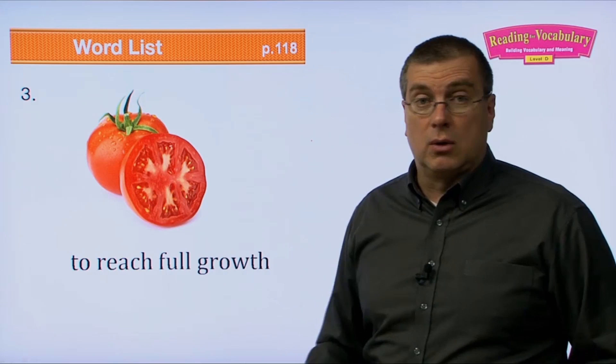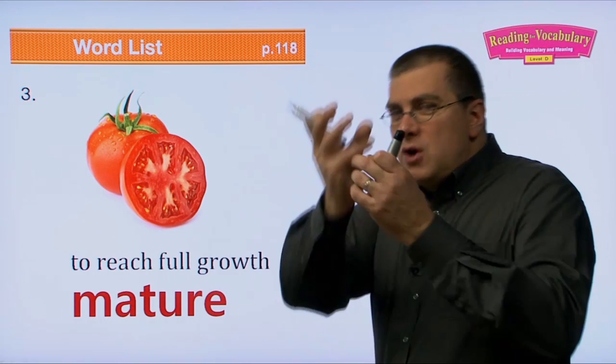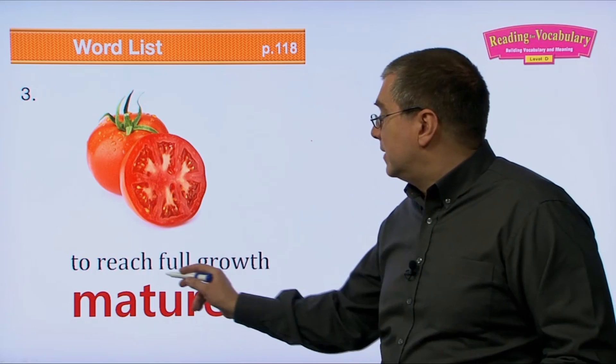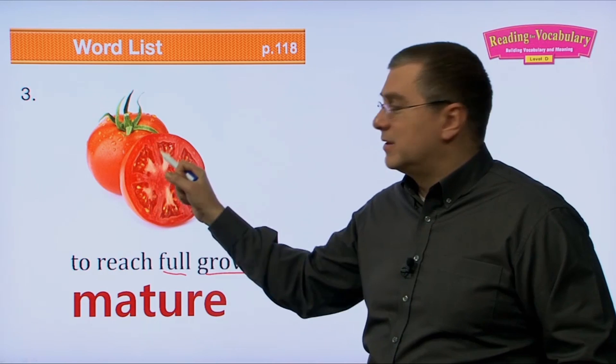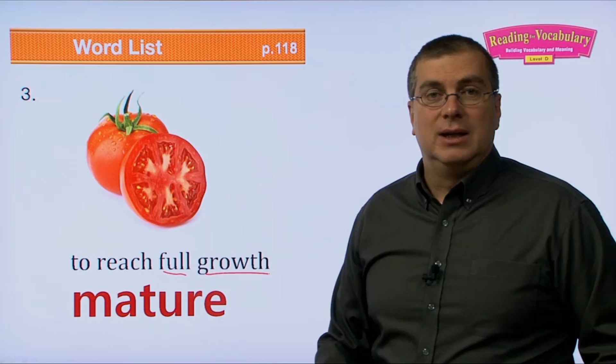Number three: to reach full growth — that's to mature. When we talk about plants and crops like corn, tomatoes, apples, or pears, we don't pick them when they're young and not mature. We have to wait till they're fully grown, then we pick and eat them. If you pick a tomato before it's mature, it's too small, green, and tastes horrible. But if you wait till it's mature, it tastes good and is larger.